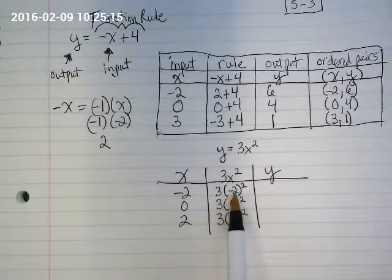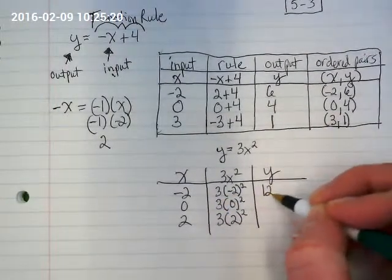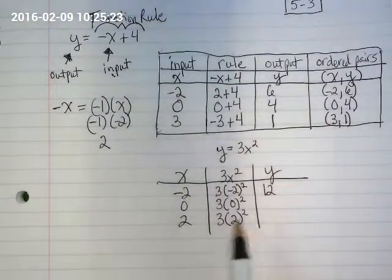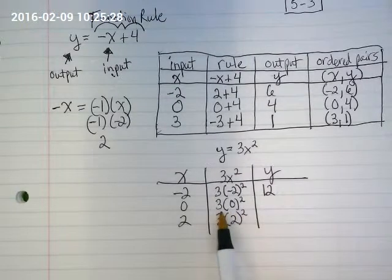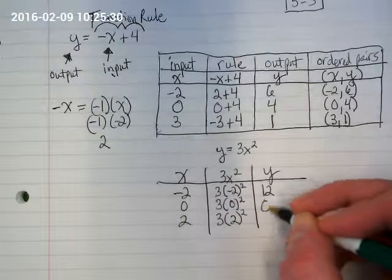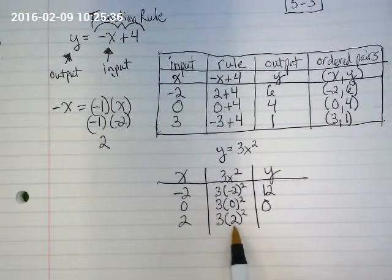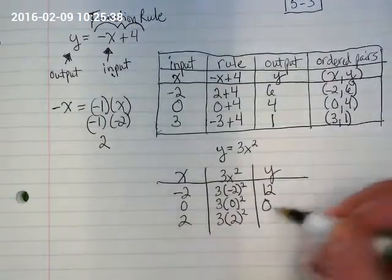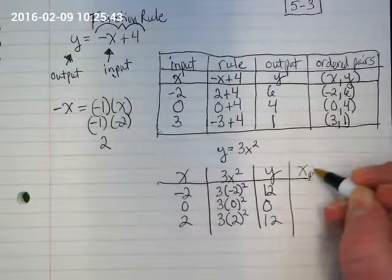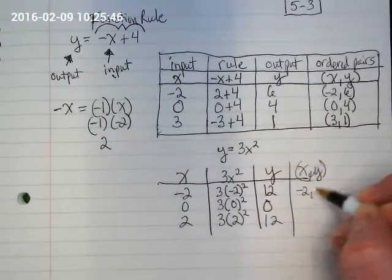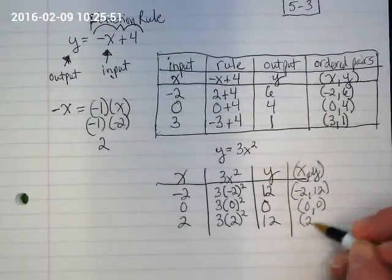So negative 2 times negative 2 would be positive 4. 4 times 3 is 12. Let's go ahead and finish this off. So 0 times 0 is still going to be 0, and 0 times 3 is going to be 0. And then if I'm multiplying 2 times 2, I get 4 times 3, 12. So if I did my x, y pairs here, we would have negative 2, 12, 0, 0, 2, 12.